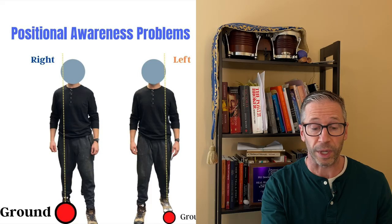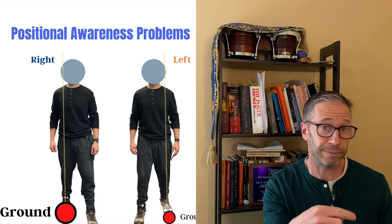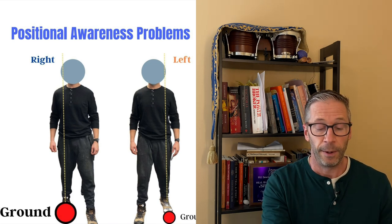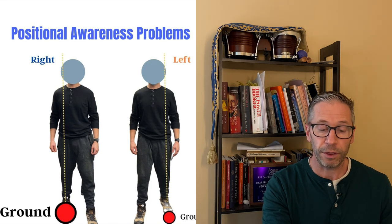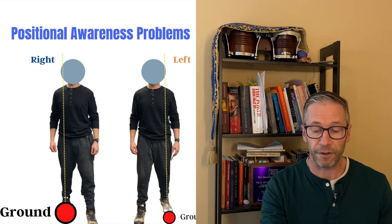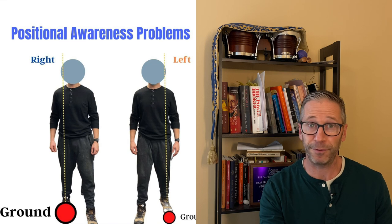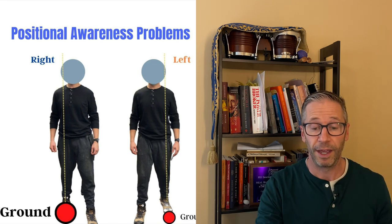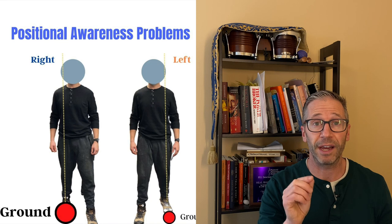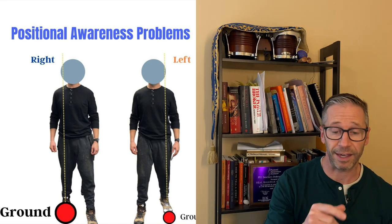That's the left AIC, right BC, right TMCC pattern. In that position, he's sensing the ground underneath his right foot too much and not enough underneath his left foot — not because there's anything wrong with his feet, but because his visual system will not allow alternation between sides.